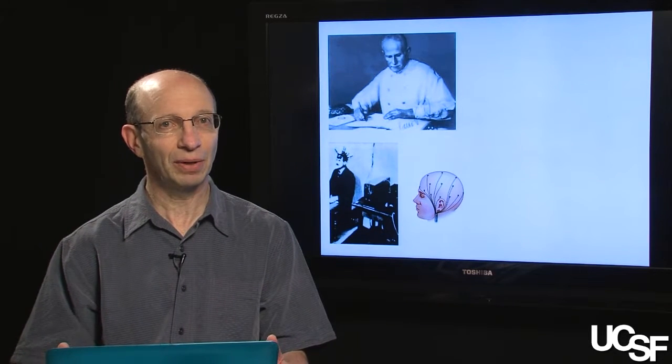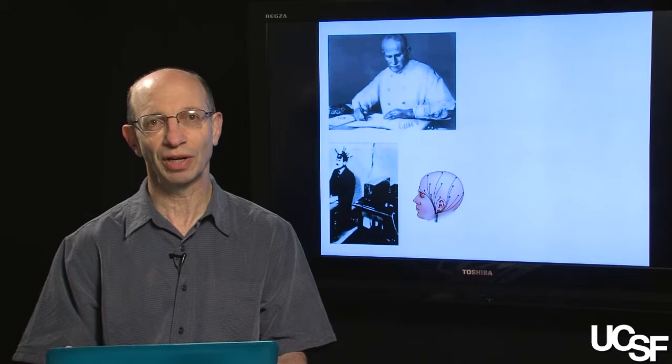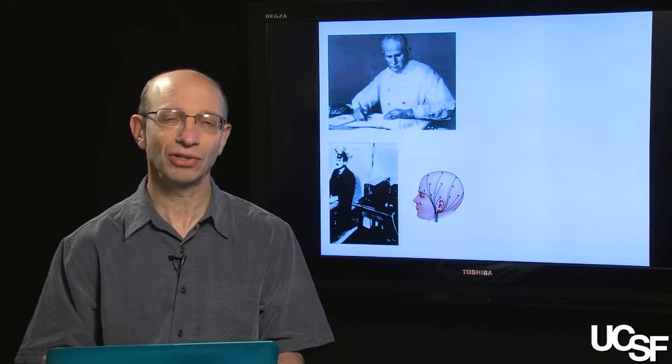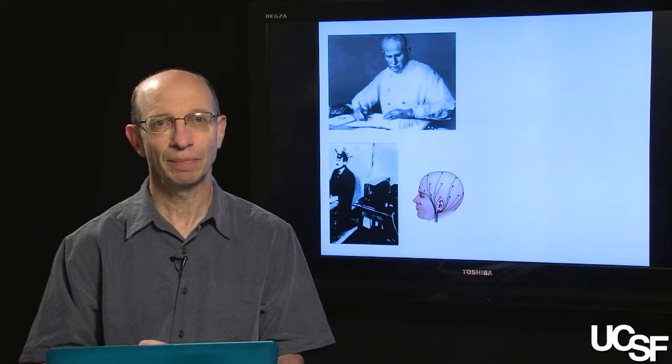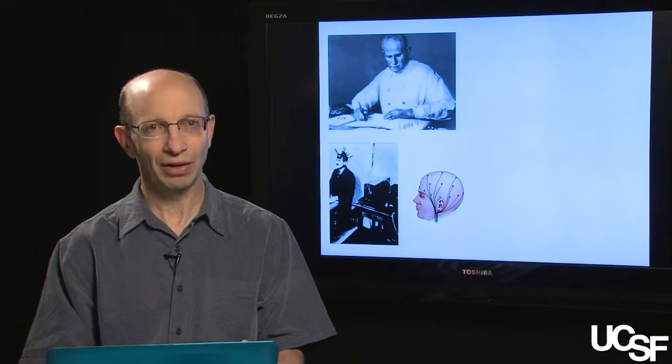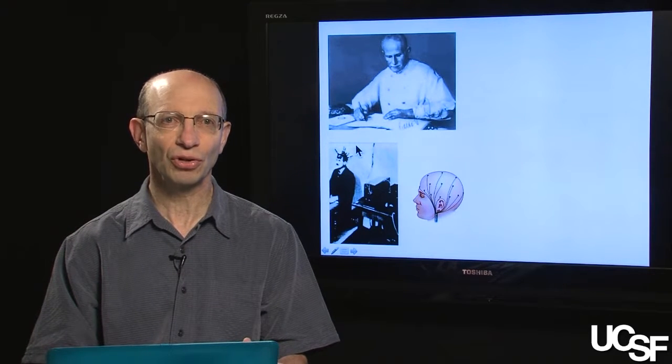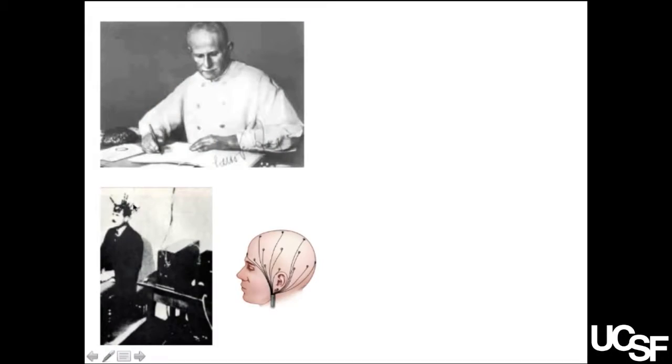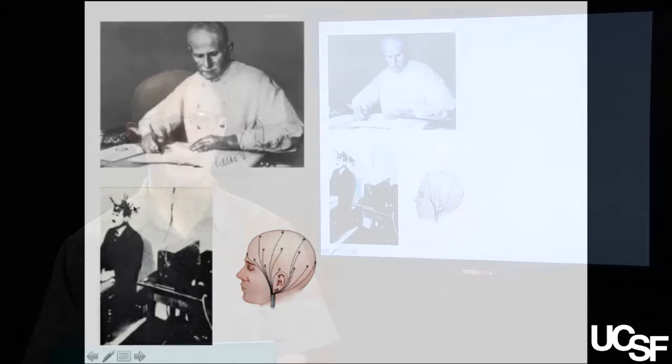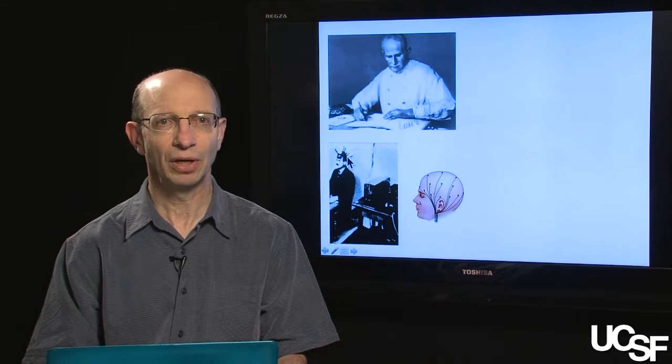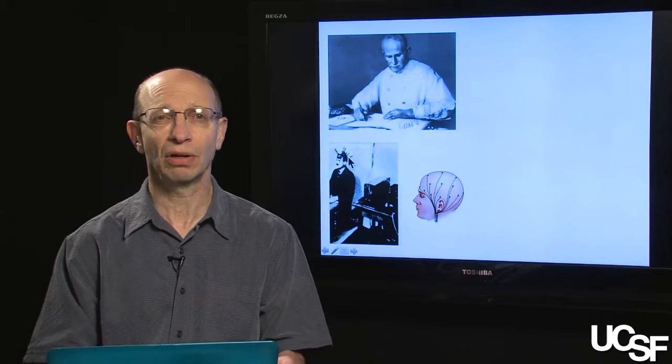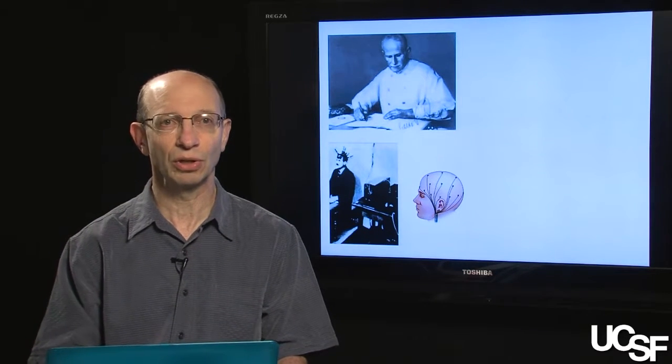Now you need to understand that in the early part of the 20th century, no one had any mechanism for actually directly measuring the activity of the human cortex. Berger figured out that if you could place electrodes on the surface of the scalp, and this is actually the very first EEG machine or device that he created, that these electrodes placed in different places along the scalp were capable of actually recording the electrical activity of the underlying human cortex.